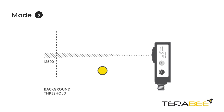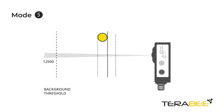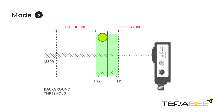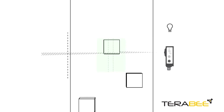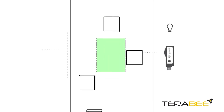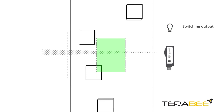In mode 5, a background threshold is first taught in. Next, an object is passed through the entire sensor's field of view. From the measured distance, two symmetric distance limits automatically form a trigger zone. Using such a trigger area can help verify object proper alignment or misalignment.